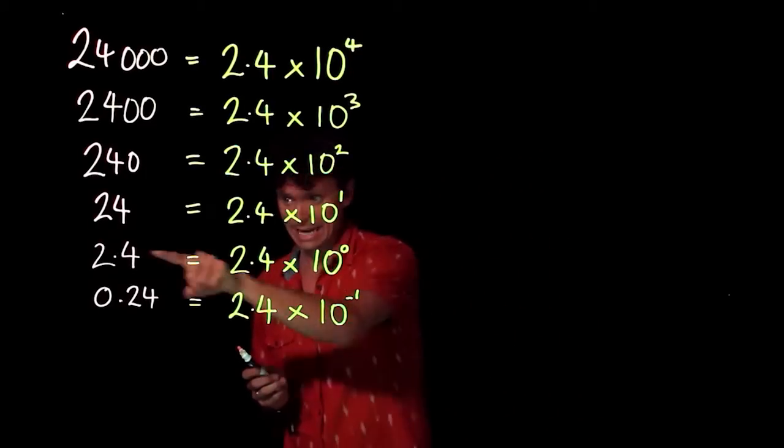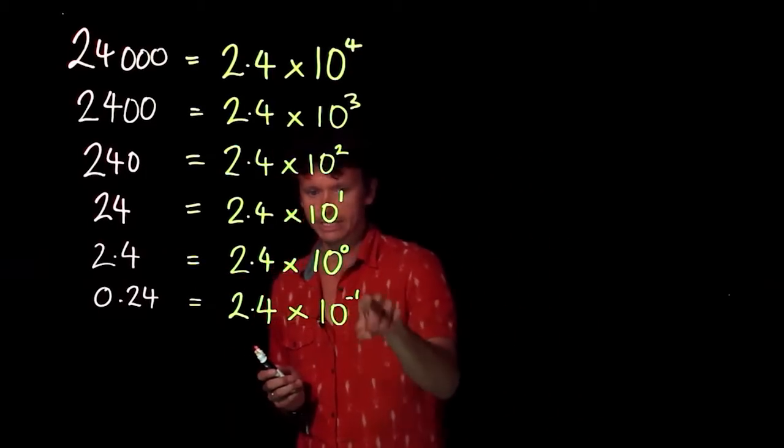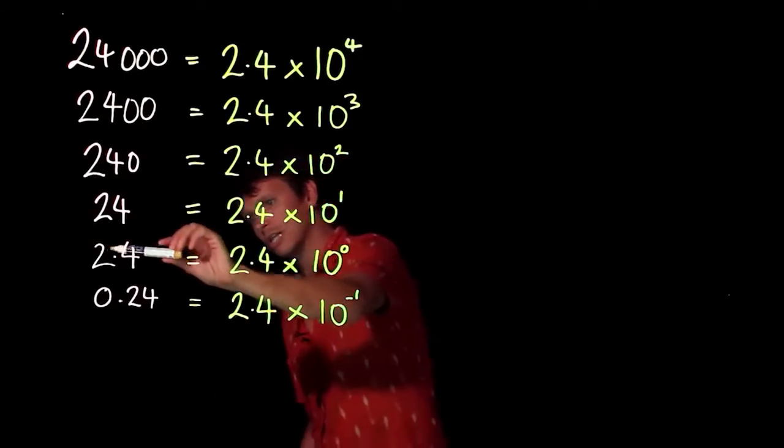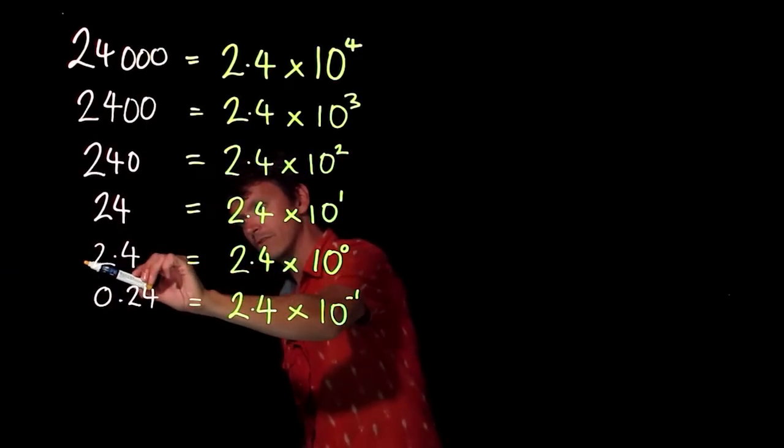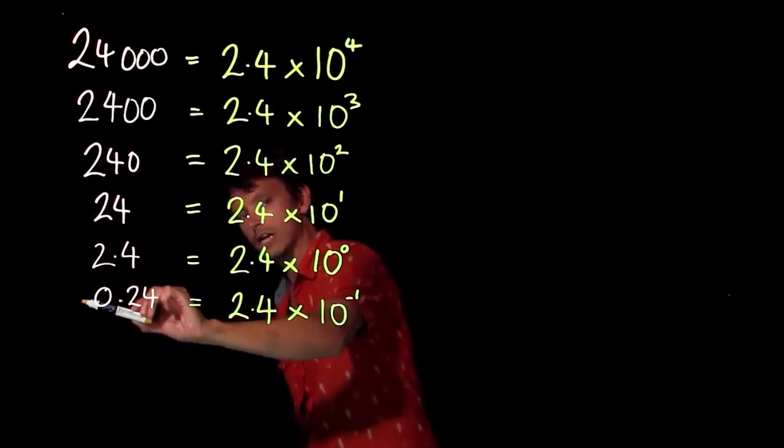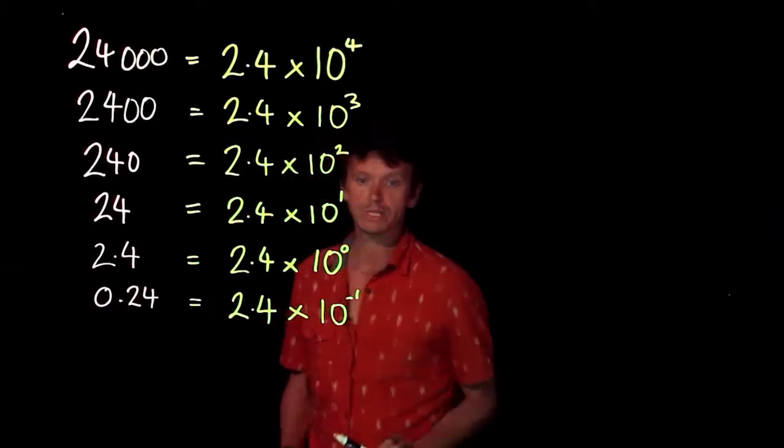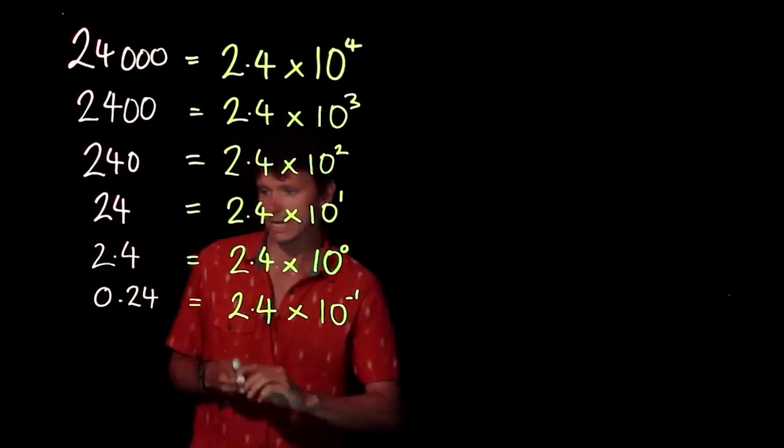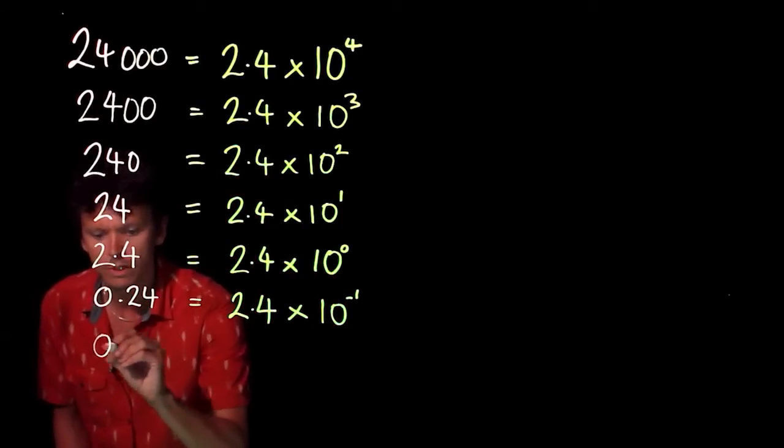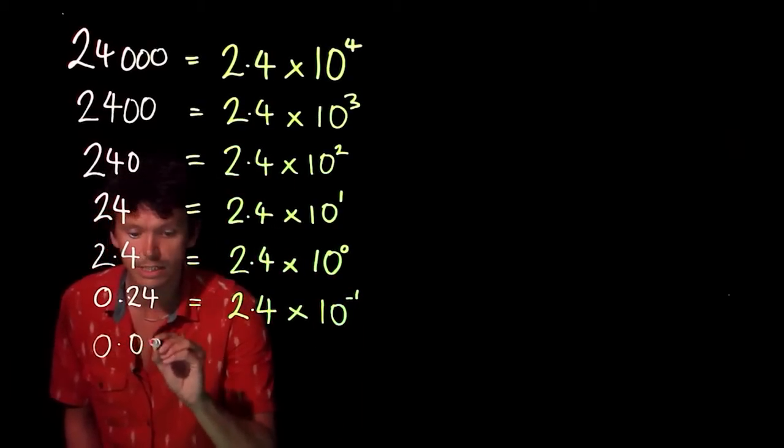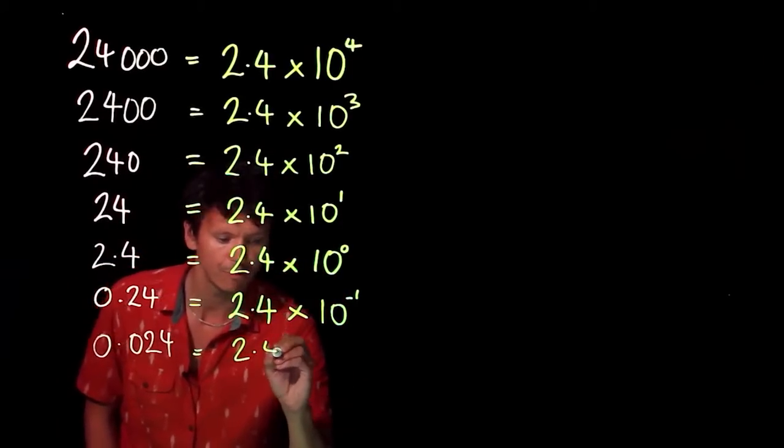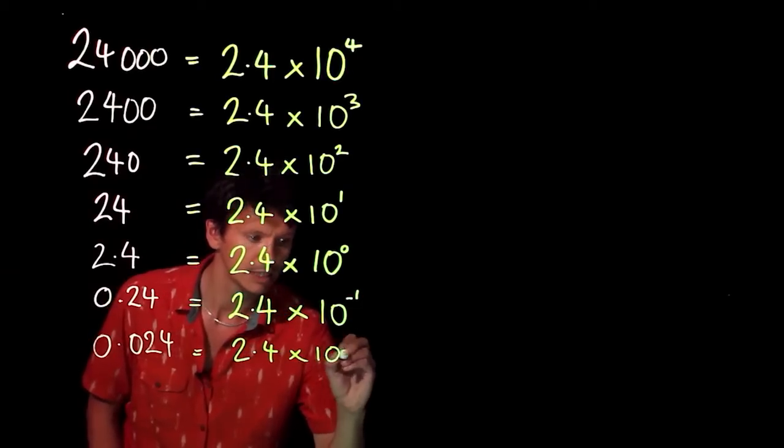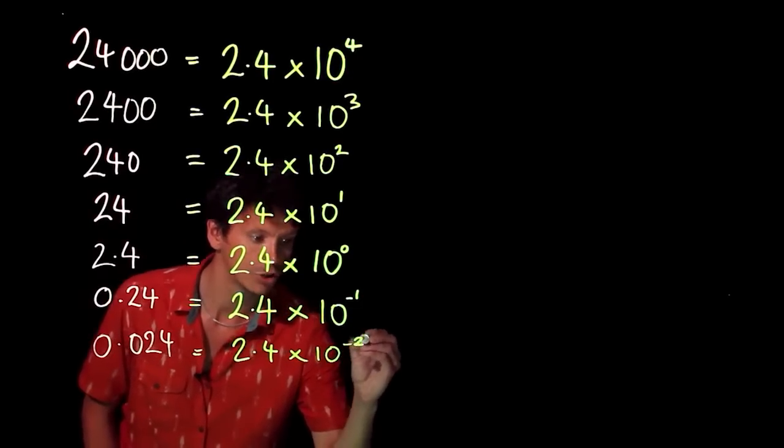The effect that multiplying by this negative power has is the same as dividing by 10. Moving from here to here, we've divided by 10 by dropping this power by 1. We can carry this on: 0.024, just the same, starting with that 2.4 again times 10 to the minus 2.